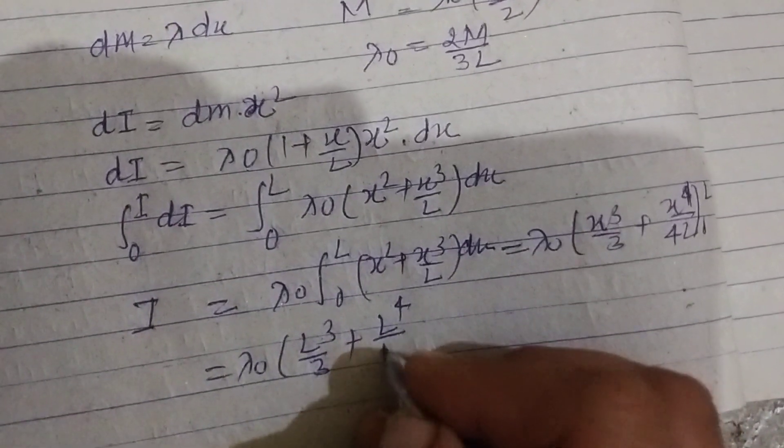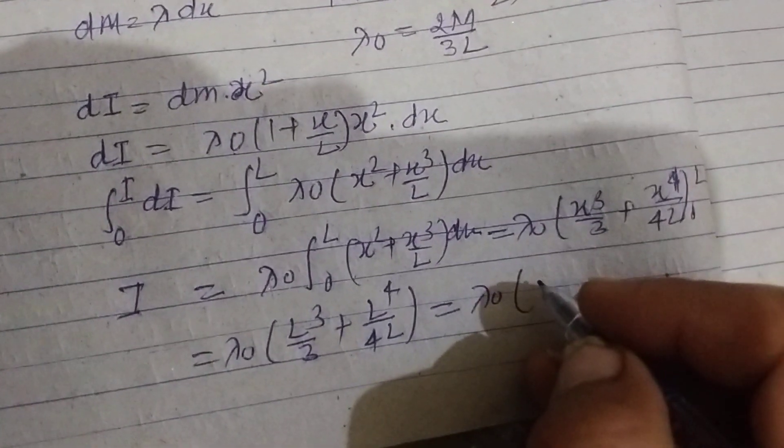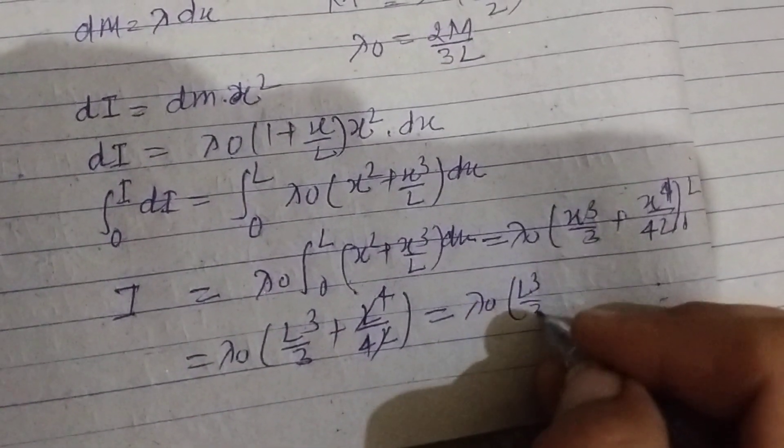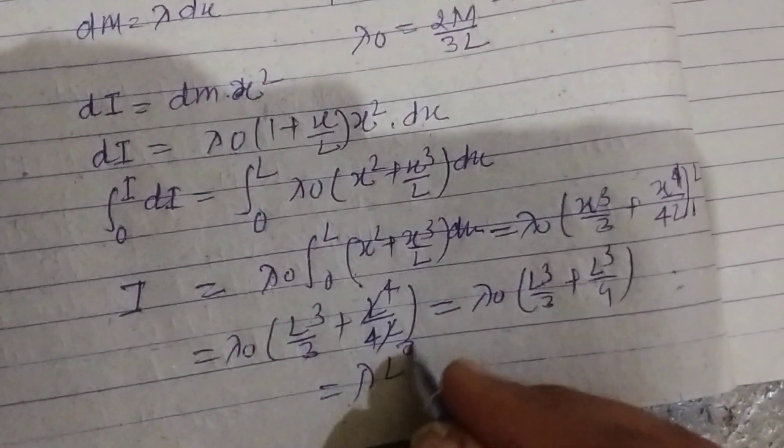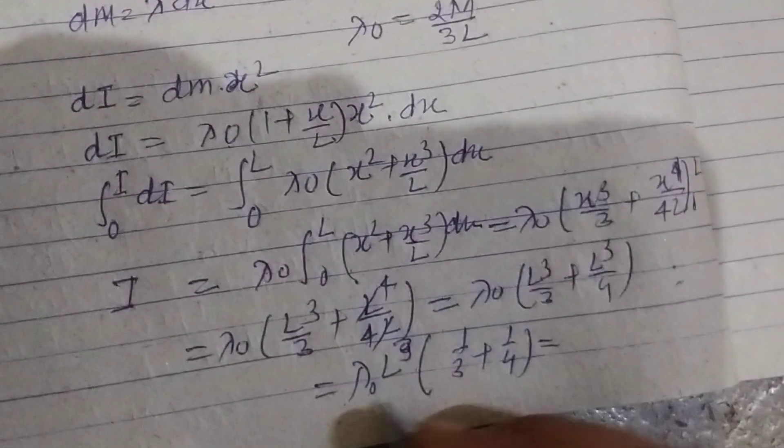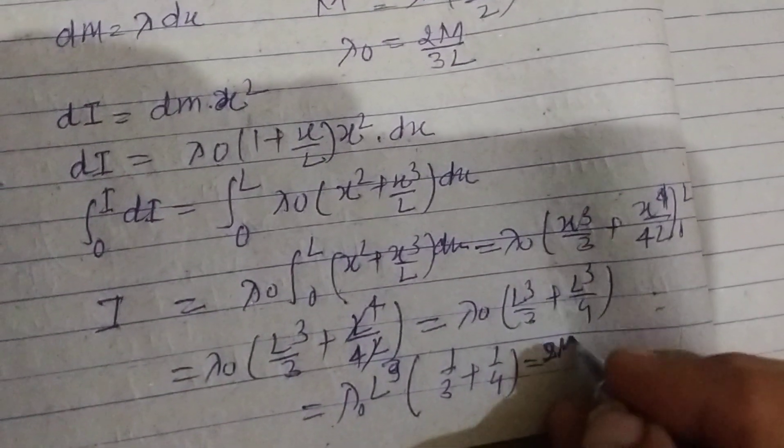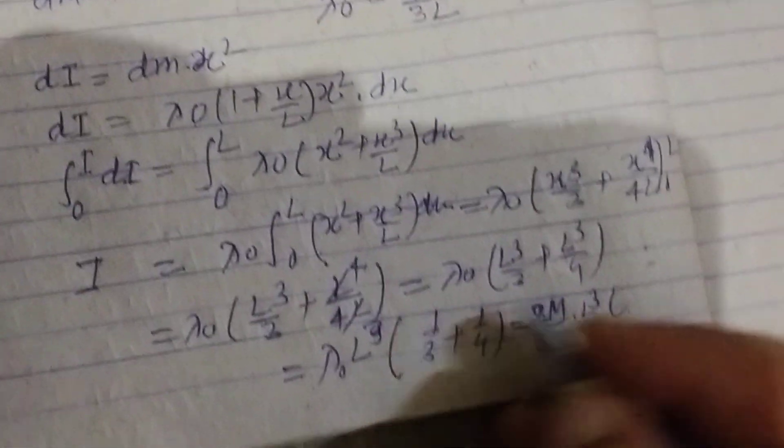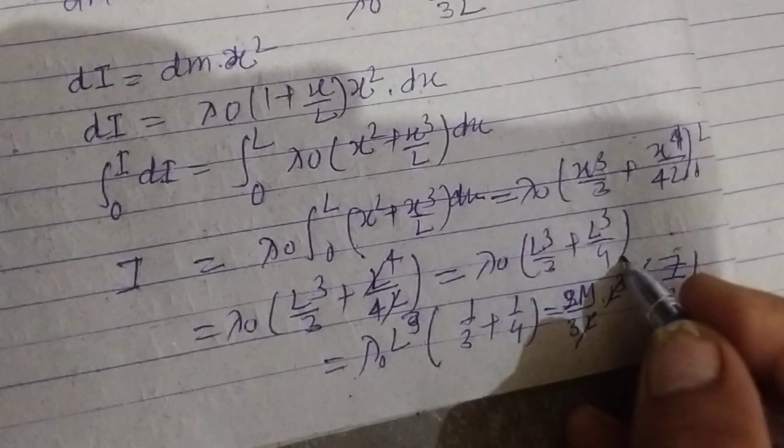So lambda naught, this is L cubed by 3 plus L to the power 4 by 4L. Lambda naught, now this is L cubed plus L cubed by 3 plus L cubed by 4. So taking L cubed as common from this, we got 1 by 3 plus 1 by 4, and lambda naught is what, 2M upon 3L. 2M upon 3L into L cubed, and this becomes 4 plus 3, 7 by 12. So L is divided by this L.